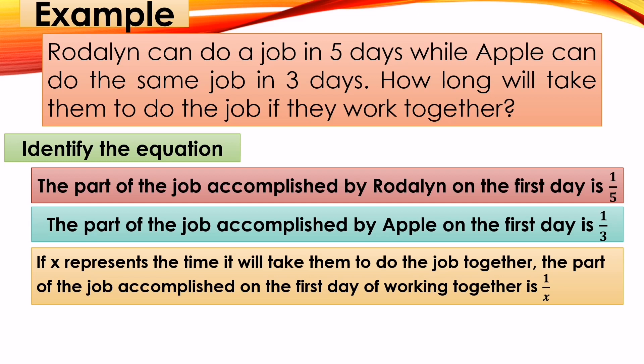So when we add the work of Rodalin and Apple together, it equals 1/5 plus 1/3 equals 1/x. That will be our rational equation.